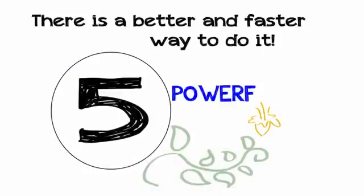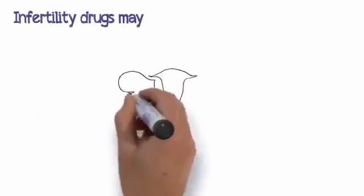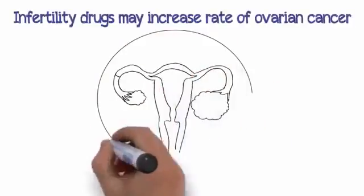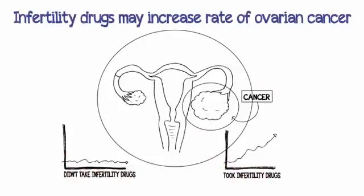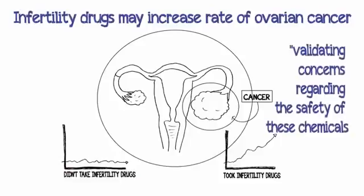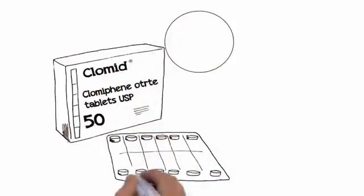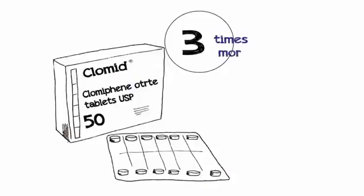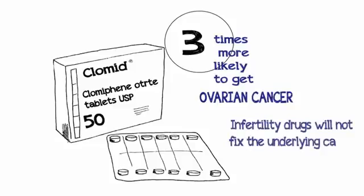I'm going to share with you five powerful keys to overcome infertility for good. Key number one: Infertility drugs may increase the rate of ovarian cancer. A study in the New England Journal of Medicine found a higher rate of ovarian cancer among women who took infertility drugs. Those who had taken Clomid were three times more likely to get ovarian cancer. Infertility drugs will not fix the underlying cause of your problem.